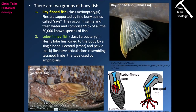Bony fish consist of two groups: ray-finned fish and lobe-finned fish. Ray-finned fish have fins supported by fine bony spines called rays, which help keep the fin open. Ray-finned fish live in both saline and freshwater environments and comprise about 99% of all the approximately 30,000 known species of fish — an extremely successful group.